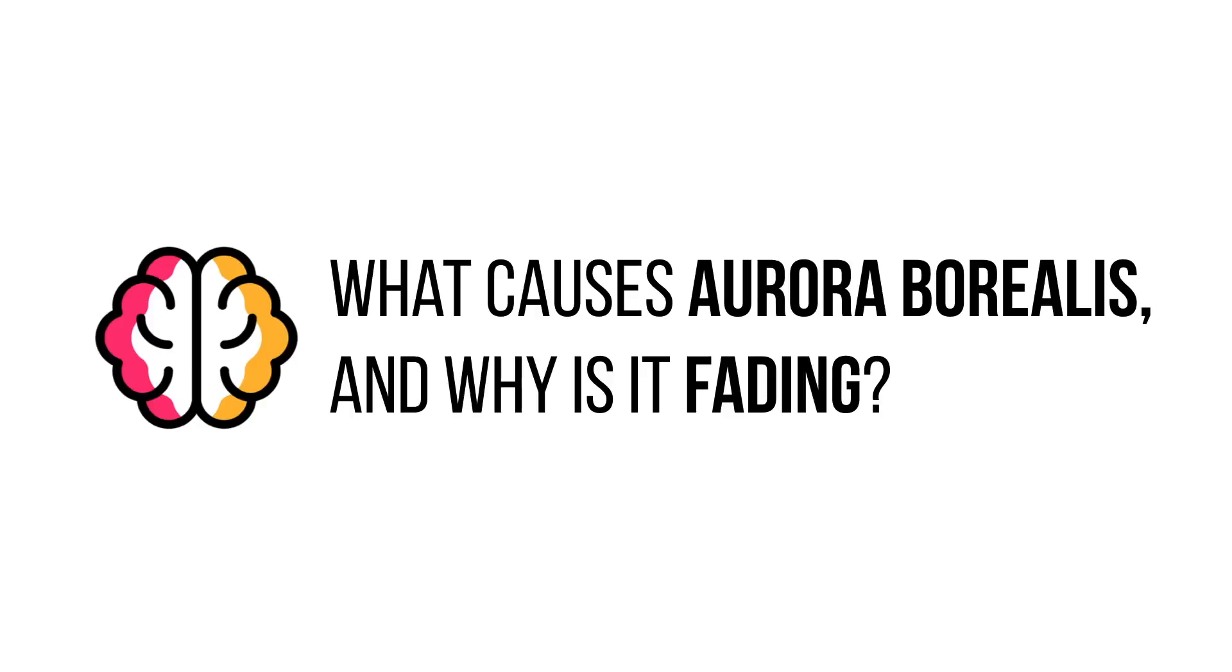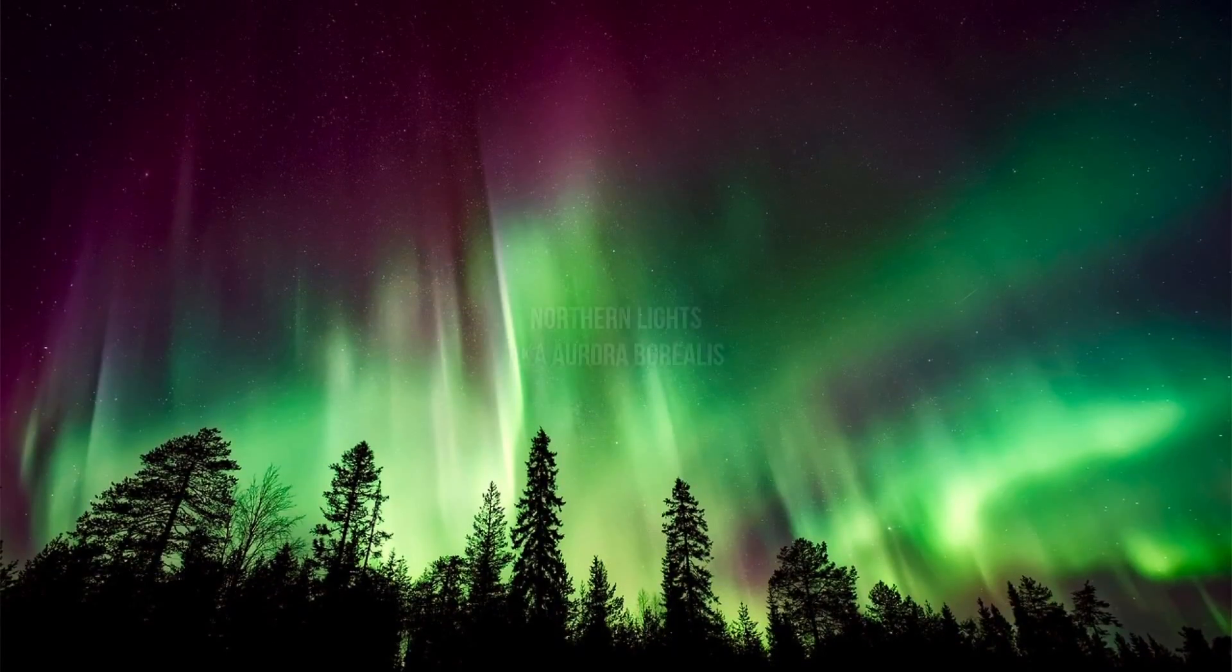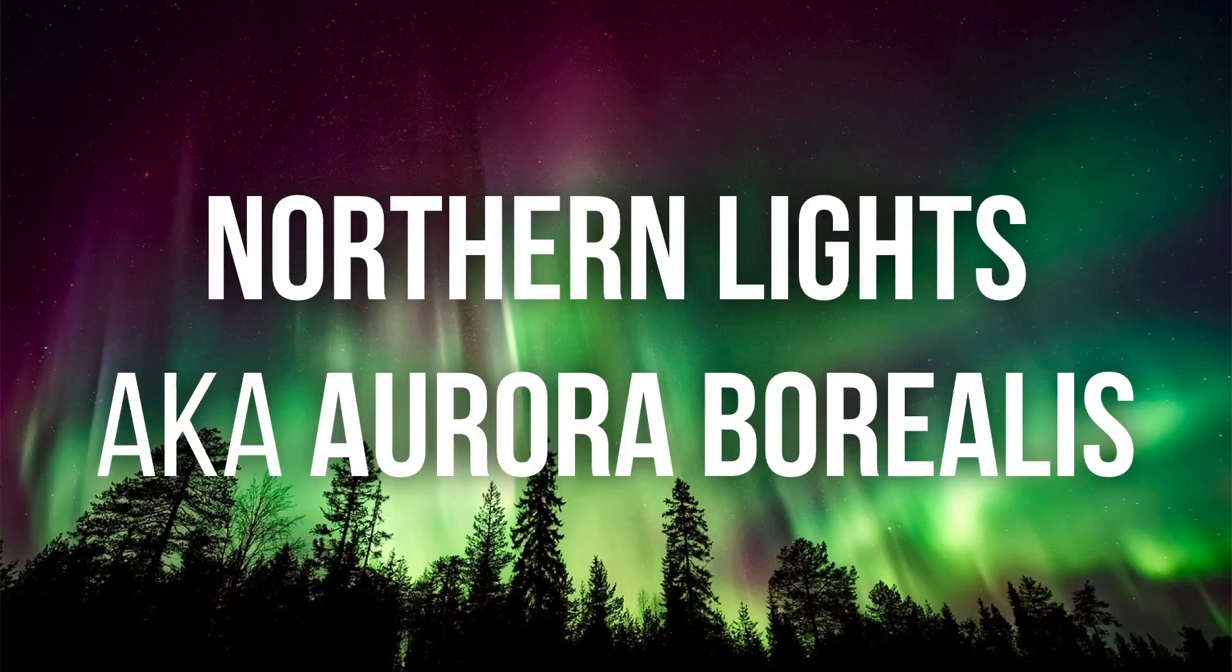Before we can understand why it's fading, we need to understand why this colorful gradient occurs. The northern lights, otherwise known as Aurora Borealis, forms in a complicated process that all starts at the sun.